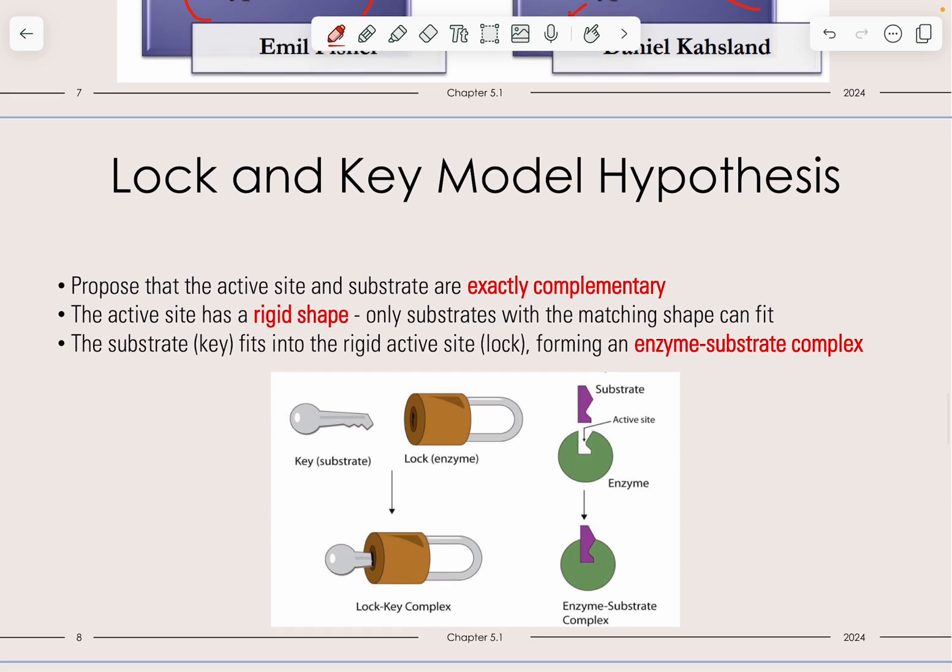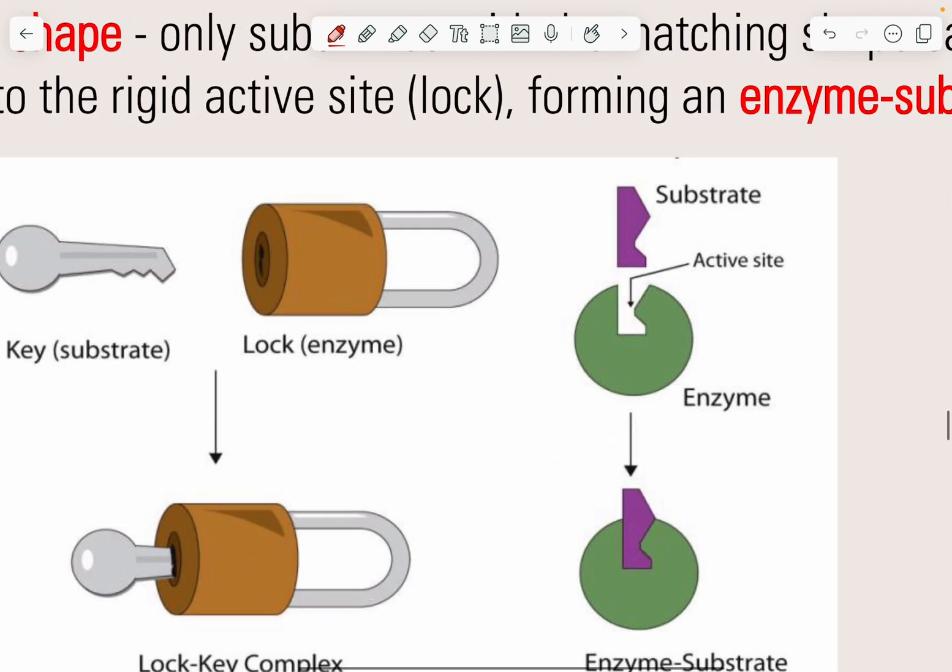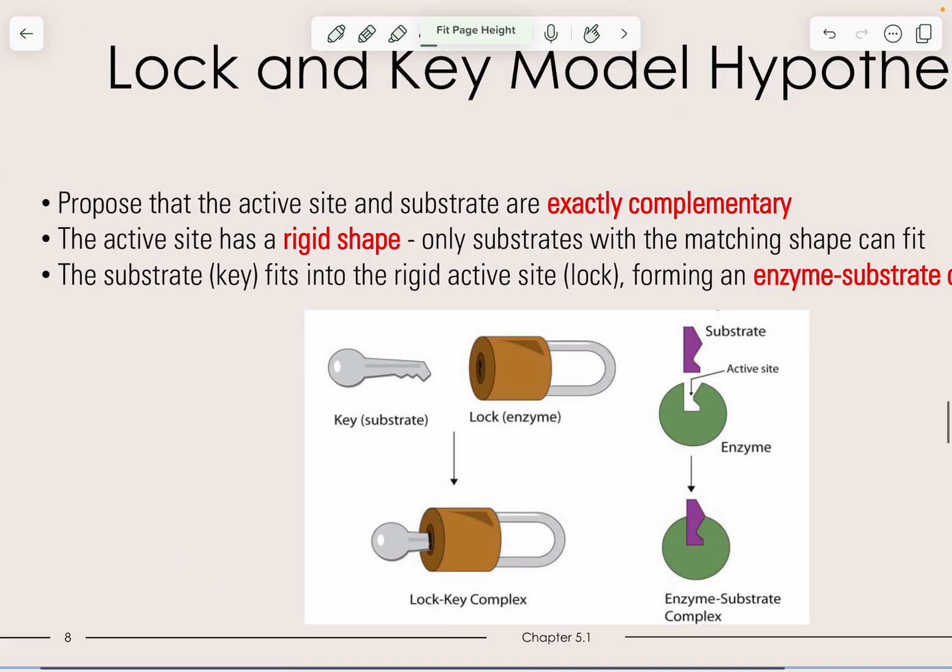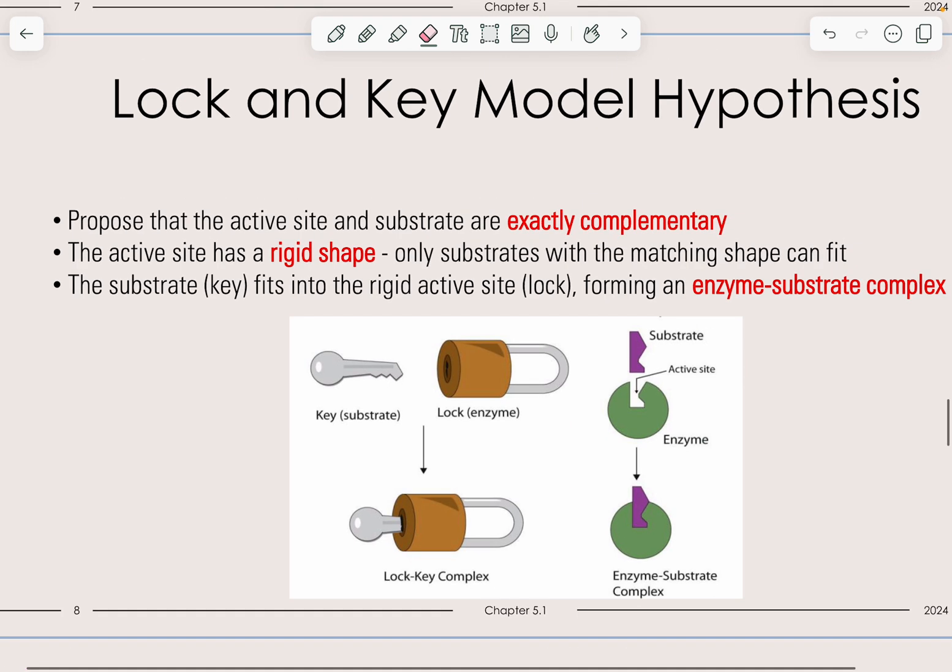Let's talk about the lock and key model hypothesis. It is proposed that the active site and substrate are exactly complementary. What does exactly complementary mean? It means that this particular substrate will bind exactly to the enzyme and fits 100% correctly. The active site has a rigid shape, meaning it only has that specific shape for the substrate to bind. If the substrate does not have the same shape, the enzyme won't be able to conduct the reaction, and only the substrate with the matching shape can fit.